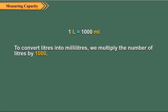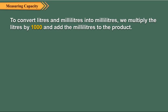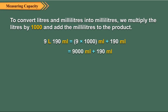So in this way, let us convert 8 liters into milliliters. And to convert liters and milliliters into milliliters, we multiply the liters by 1000 and add the milliliters to the product. Let us now convert 9 liters 190 milliliters into milliliters.